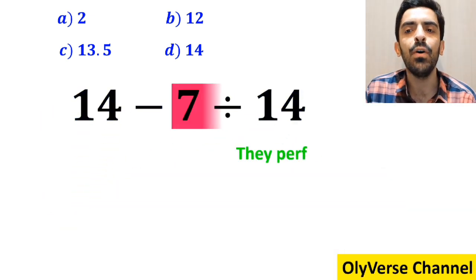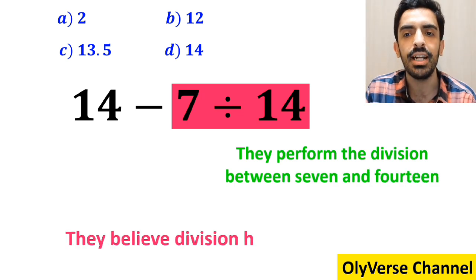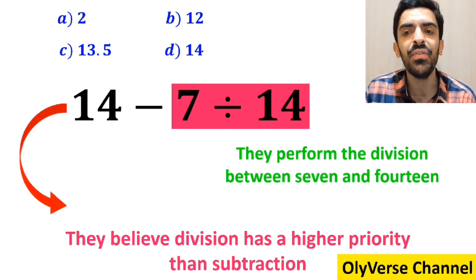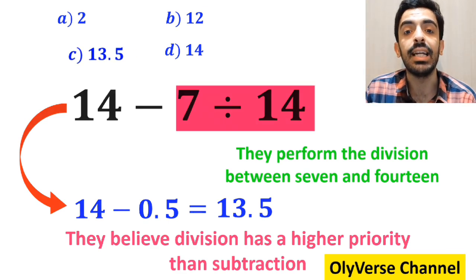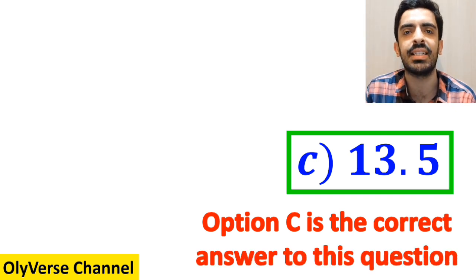The next step, they perform the division between 7 and 14 since they believe division has a higher priority than subtraction. They simplify this expression to 14 minus 0.5, which finally gives them the answer 13.5. Then, without hesitation, they say that option C is the correct answer to this question.